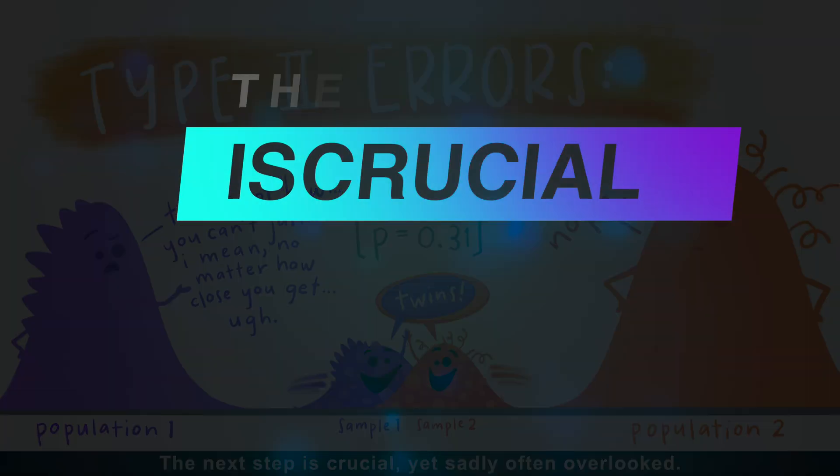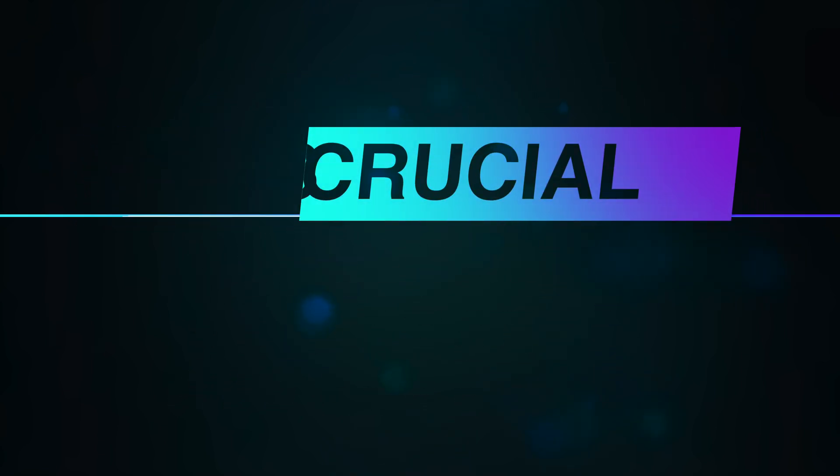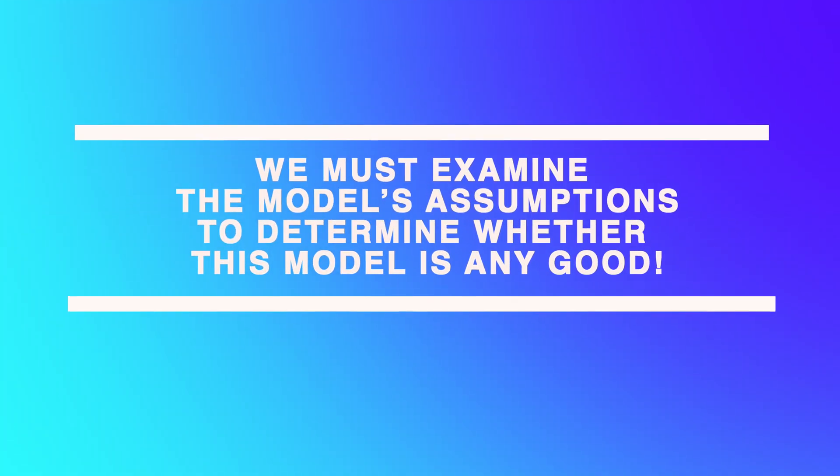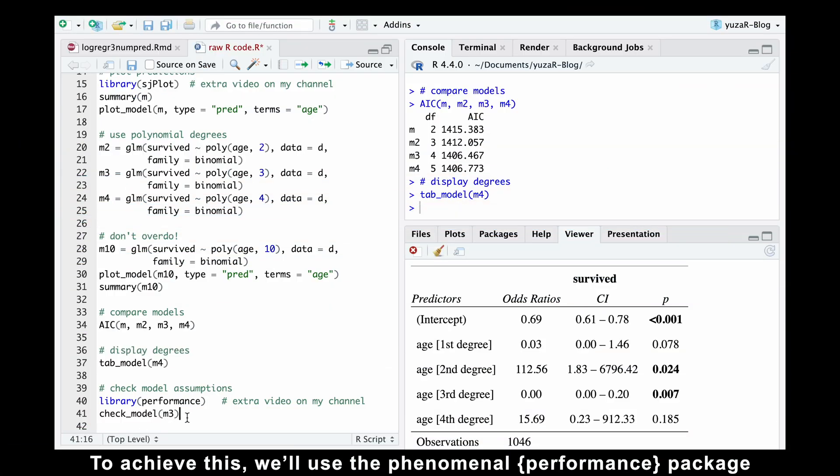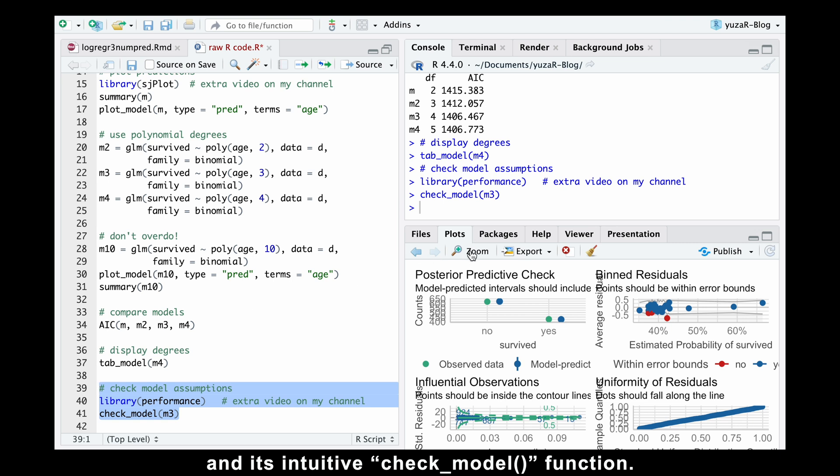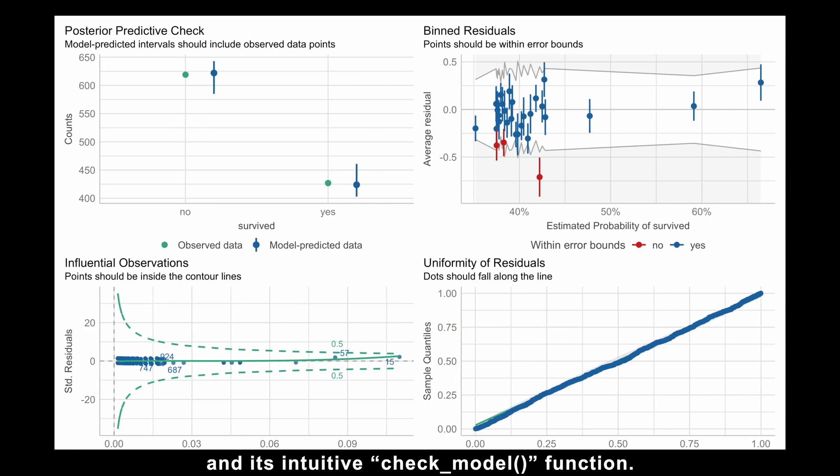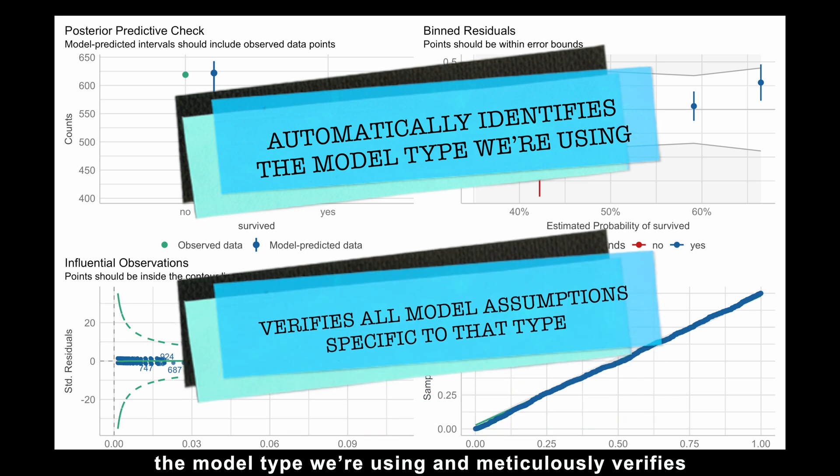The next step is crucial, yet sadly often overlooked. We must examine the model's assumptions to determine whether this model is any good. To achieve this, we'll use the phenomenal performance package and its intuitive check_model function. This magical function automatically identifies the model type we are using and meticulously verifies all model assumptions specific to that type.